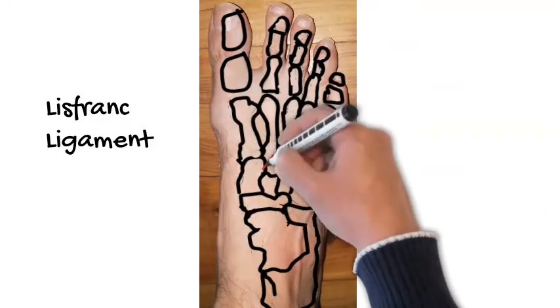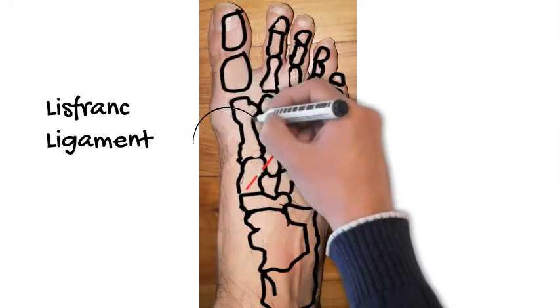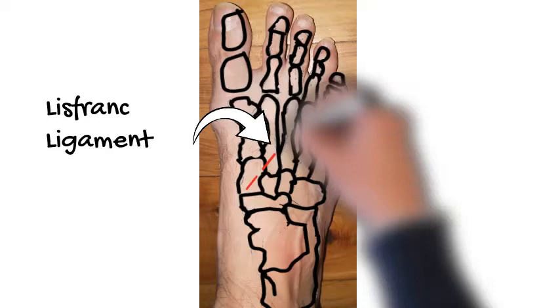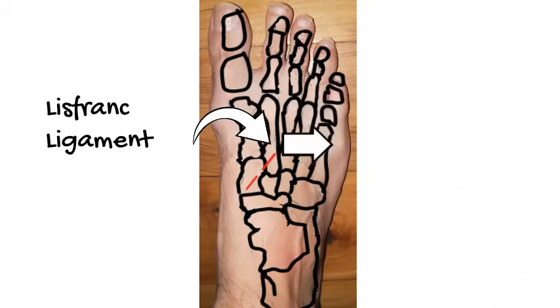Now going back to that previous picture, the Lisfranc ligament is often broken in these injuries. It can be just snapped itself, or it can come off with a piece of bone attached to it more often than not, and what happens is that that bone, that second metatarsal, moves to the right as is shown in the arrow there.